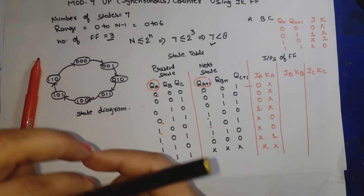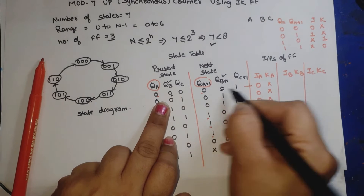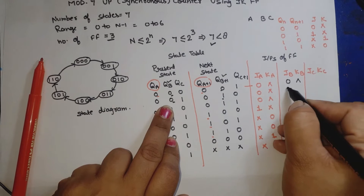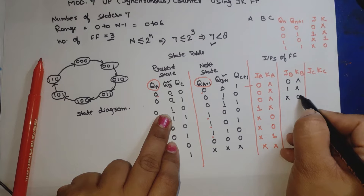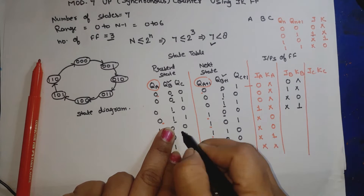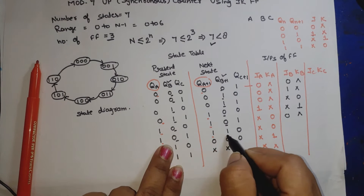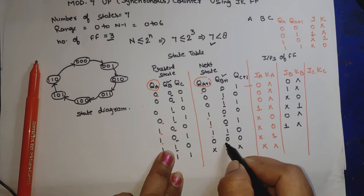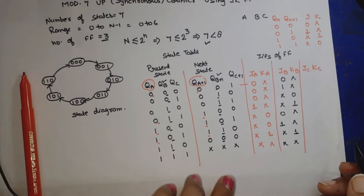For JB and KB, we compare QB and QB+1 for each state transition. 0→0 gives 0,X; 0→1 gives 1,X; 1→1 gives X,0; 1→0 gives X,1. We apply this for all rows to fill in the JB and KB columns, including don't care for the unused state.